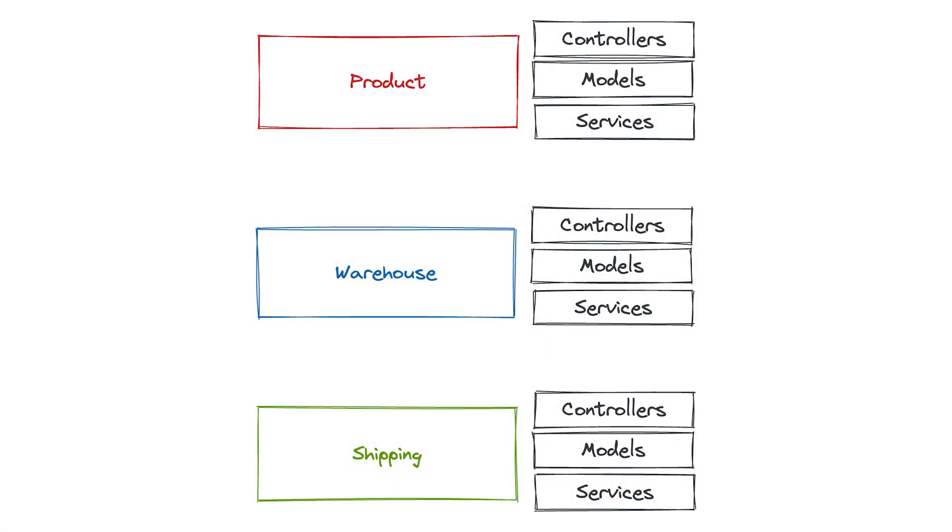The first thing you do is start splitting things by context. Previously everything was together — all your controllers together, all your models together, all your mailables together. Now you can split things by context: a folder that has everything related to the warehouse module, a folder for the shipping module, and so on. You're grouping things by context and you can see all it does in a glance. This is really helpful when your app is growing, your team is growing, and you don't want them to have to learn the full context of the application to do a small thing. If you want to work on the shipping module, you're more constrained — you only deal with things related to shipping.